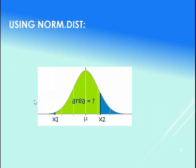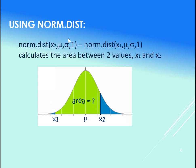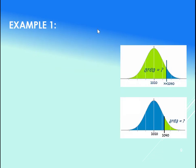What if we want the area between two x values? We subtract the norm.dist—put the largest one first, smallest x value next—subtract those two norm.dist. Okay, so let's look at an example here.